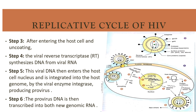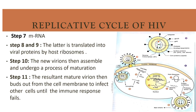In step 5, viral DNA enters the host nucleus and integrates into the host genome via the viral enzyme integrase, producing provirus. This provirus DNA is then transcribed into new genomic RNA and mRNA, which is translated into virion proteins by host ribosomes. The new virion is assembled and undergoes maturation, and the resultant mature virion buds out from the cell membrane to infect other cells until the immune response fails.